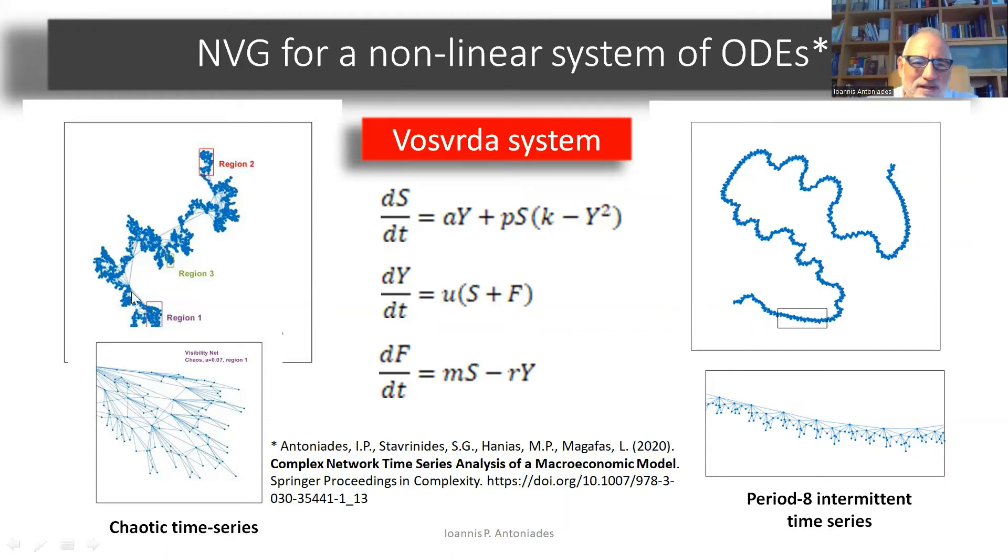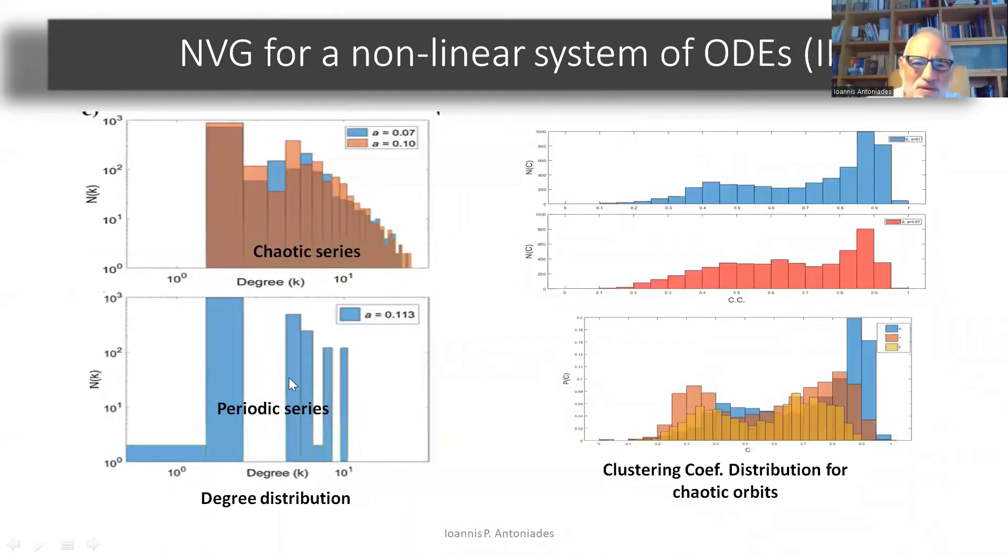And you can see already that the visibility graph of the nearly periodic time series is more ordered. It has less structure than the one coming from the chaotic series. If you look at the degree distributions, the plots on the left here, you see for the chaotic time series, you have a power law decay and the degrees can rise as high as 90.